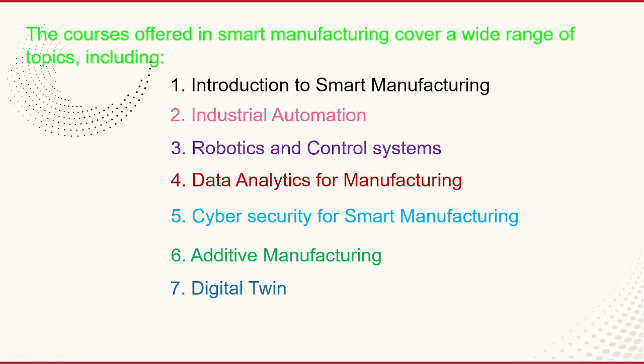Next is the digital twin course, which covers the concept of digital twins — virtual representations of physical objects or systems used to optimize performance and improve efficiency. Next is sustainable manufacturing, which covers sustainable manufacturing practices and technologies including green manufacturing, energy-efficient manufacturing, and waste reduction. These are some examples of the courses offered in smart manufacturing; the exact courses and curriculum may vary depending on the university or institution.